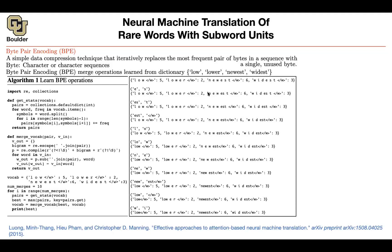Because ES is the most frequent one, you pick it and merge it. LO stays the same; the new merged ES appears in 'newest' and 'widest'. Then you do the same exercise again. LO we know appears seven times. Now let's take a look at EST: EST appears six times in 'newest' and three times in 'widest'. Six plus three is nine — nine is bigger than the rest, so you merge EST here and here.